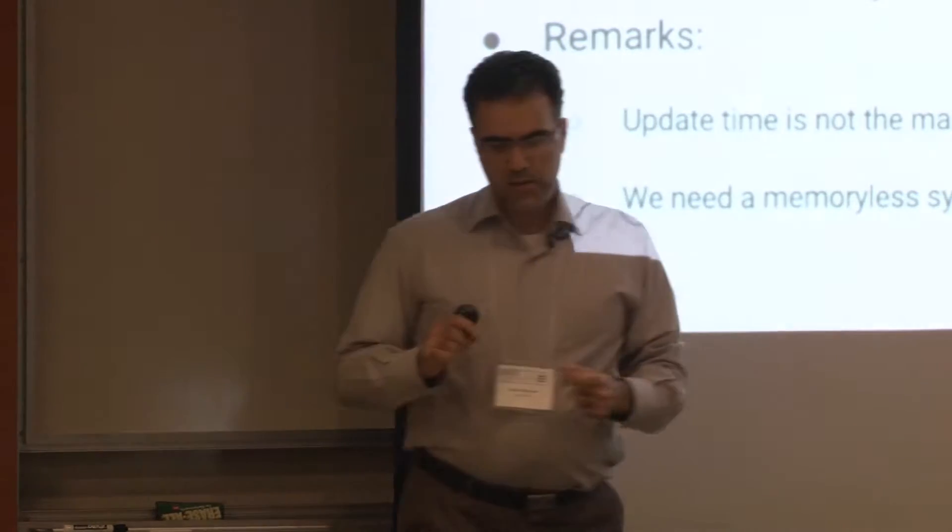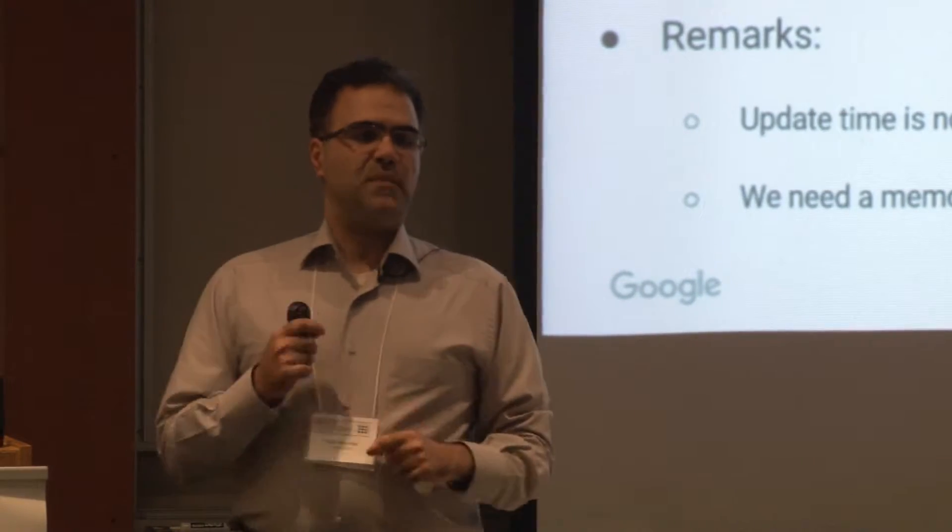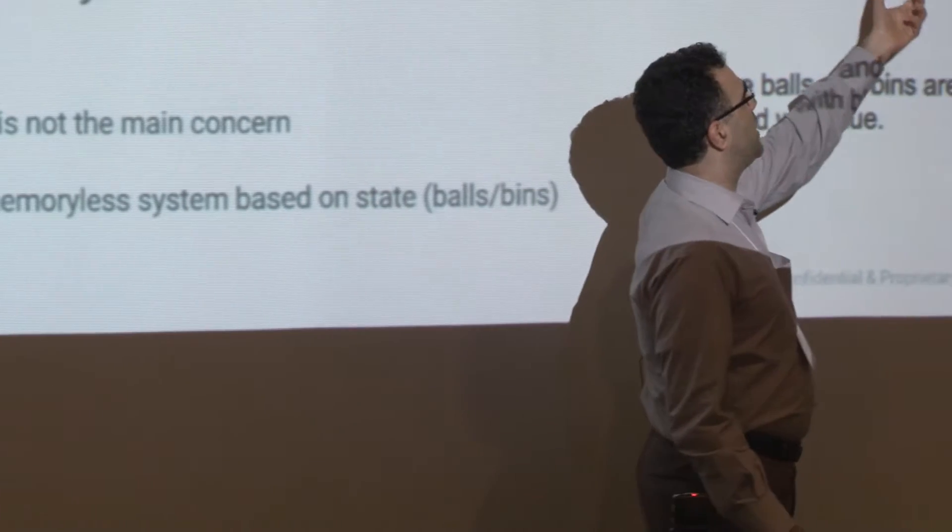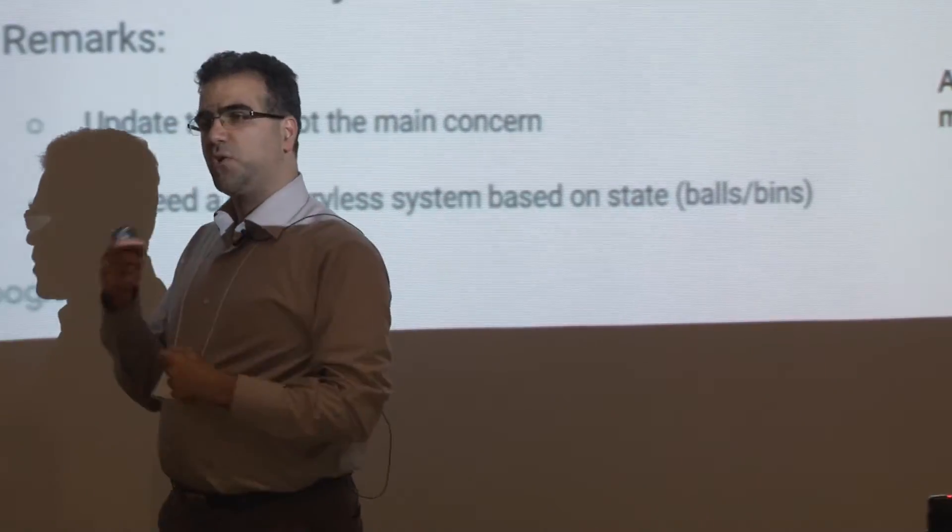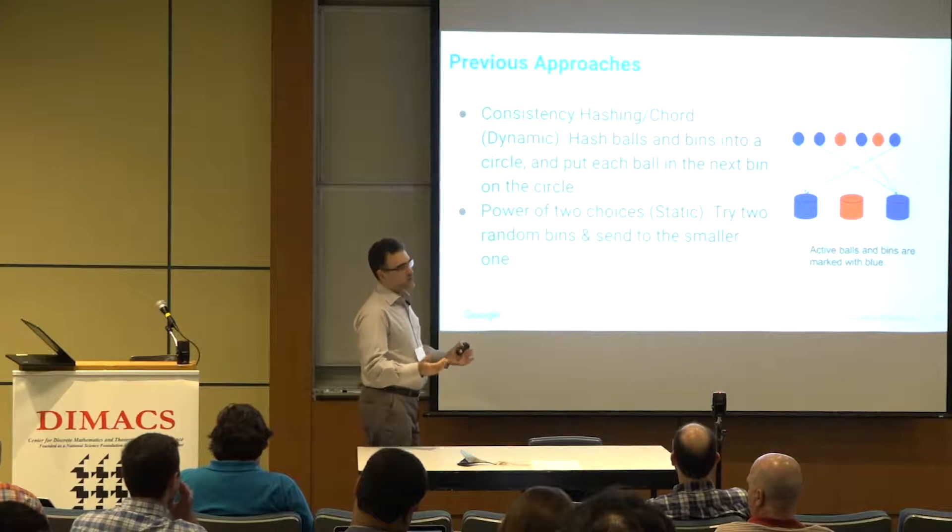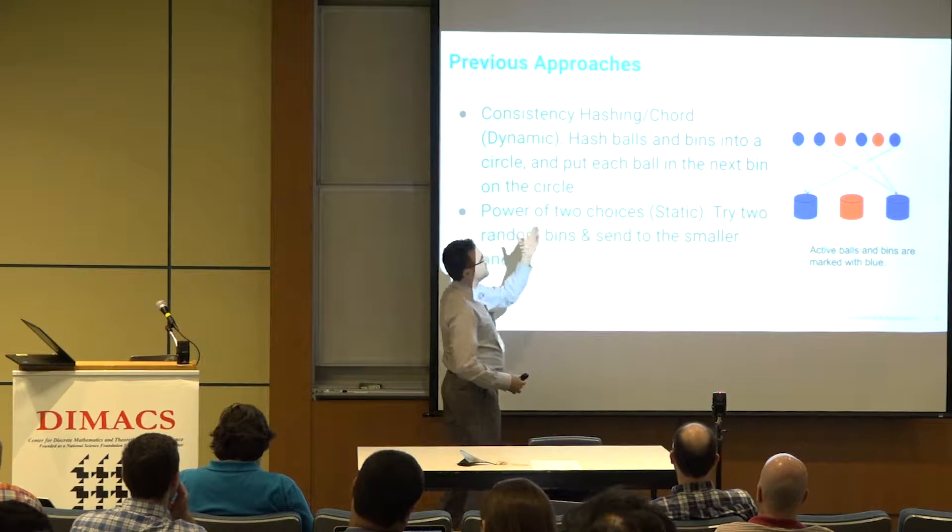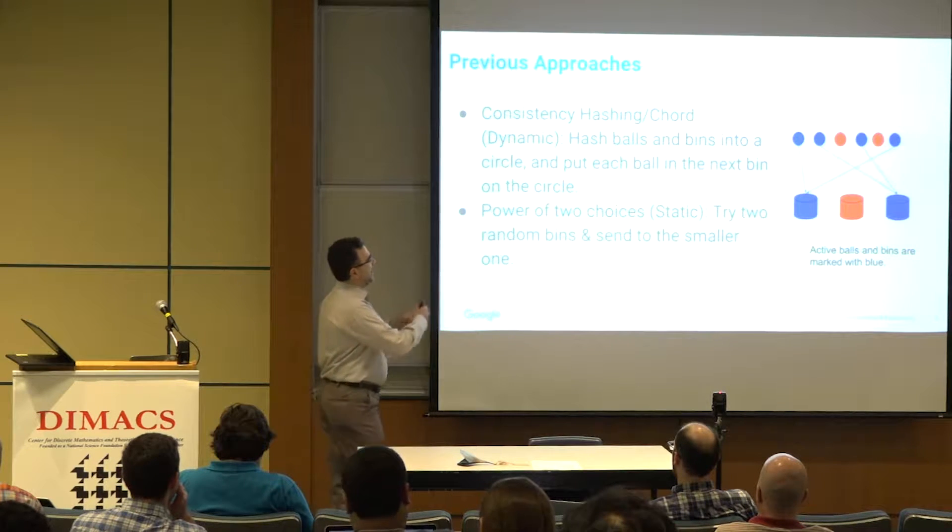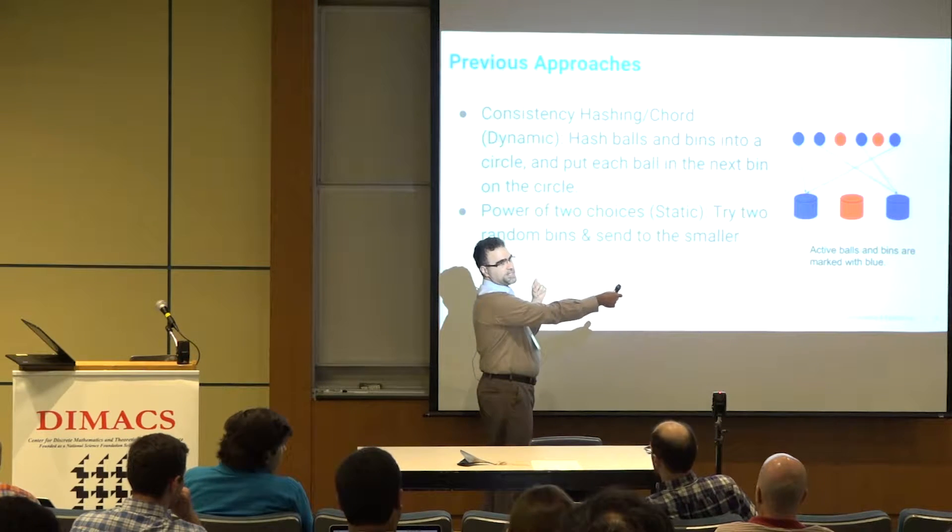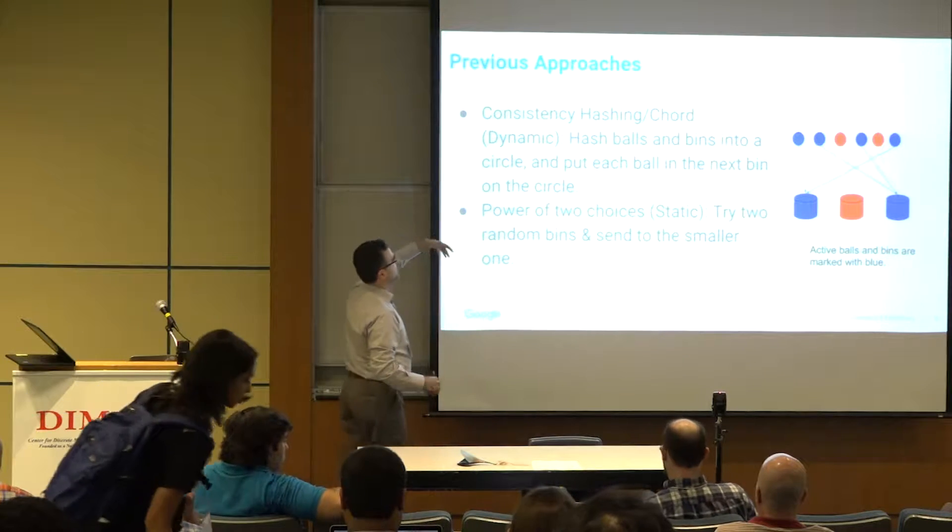The update time doesn't matter. What matters here in our setting is the fact that we have to move, for example, information of one client from one server to another server. The number of clients that change their allocation is critical. We want to minimize that, and you want to have a memory-less system that can be computed in a distributed manner without state from scratch. The method of choice here would be consistent hashing or in a distributed environment like Chord, you can hash balls and bins into a circle, even in a distributed manner, and then put each ball in the next available bin. That's what I call consistency hashing.